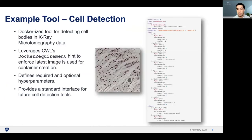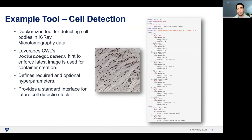Here's an example tool for cell detection. We use this tool on x-ray microtomography data to gain insight on cell count and density. This is a command line tool that leverages a Docker requirement hint to pull the latest image from our repository and ensure the user provides the required hyperparameters. One of the things I like about CWL is that the file provides a standard interface for future cell detection tools and ensures compatibility with existing workflows in general.